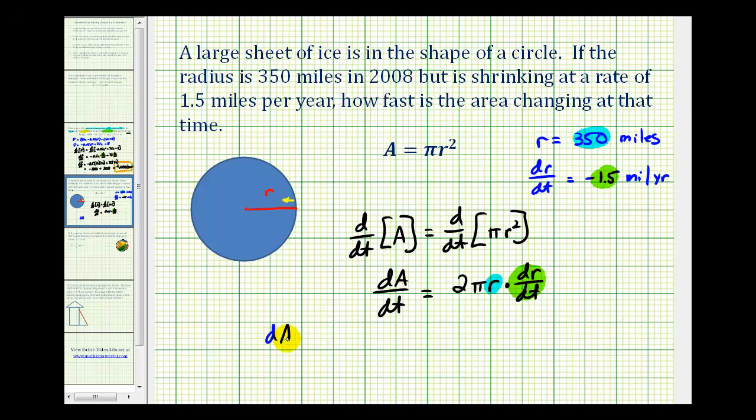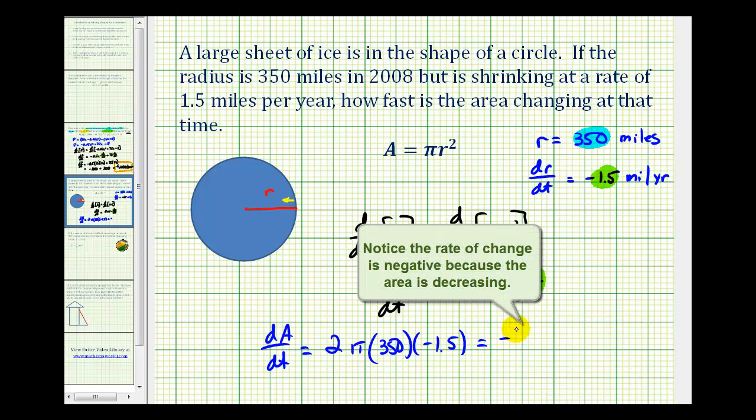So we'd have dA/dt, the change in area with respect to time, is going to be equal to 2 times π times 350 times negative 1.5. In terms of π, this is going to be negative 1,050π.